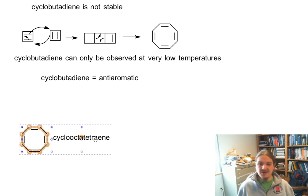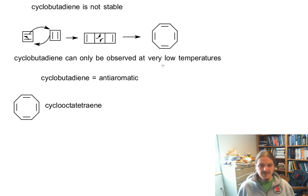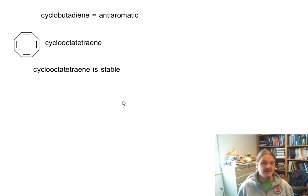Because cyclooctetraene is the end result of the self-reaction of cyclobutadiene, you might surmise that cyclooctetraene at least is stable. This is a stable compound. It can be synthesized, isolated, observed, and characterized, but it has some unusual properties.